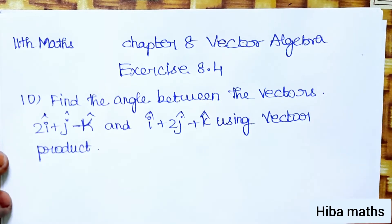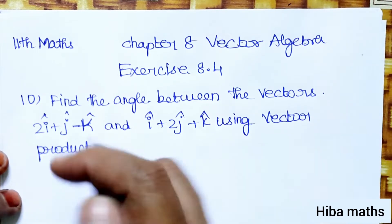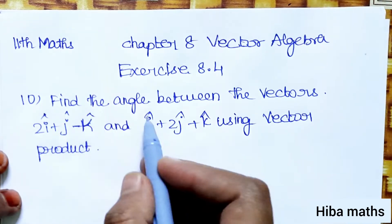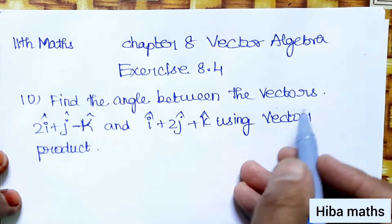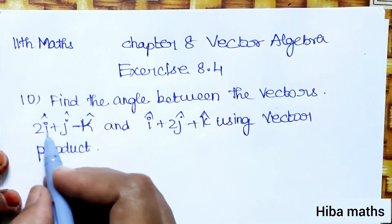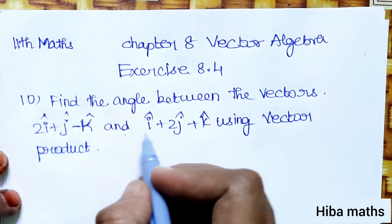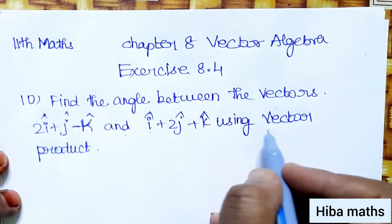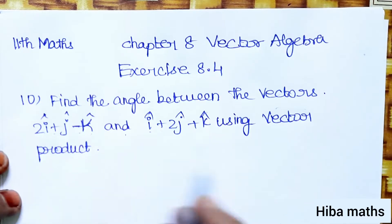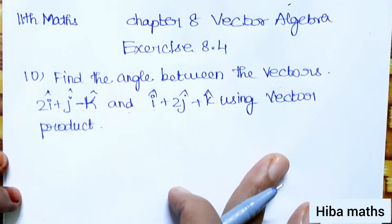Hello students, welcome to Heba Max 11th standard Maths chapter 8, vector algebra, exercise 8.4, 10th question. In this video we will find the angle between the vectors 2i plus j minus k and i plus 2j plus k using the vector product.